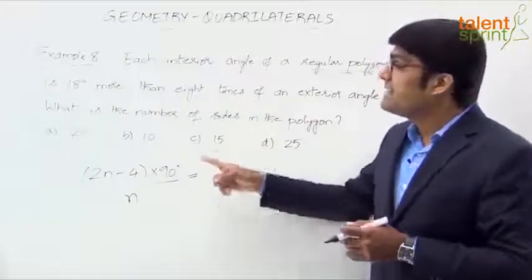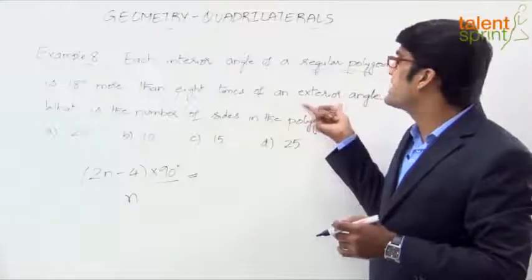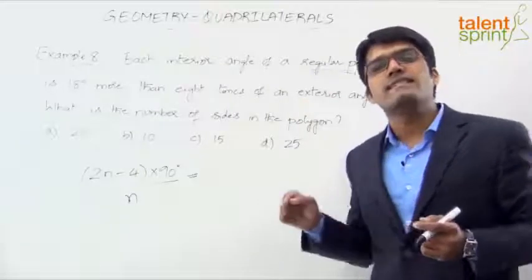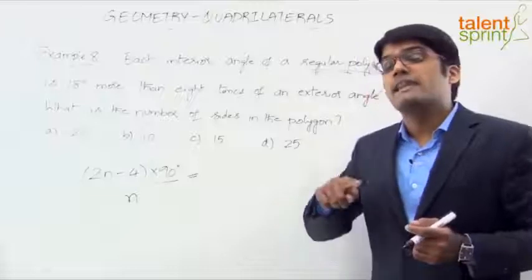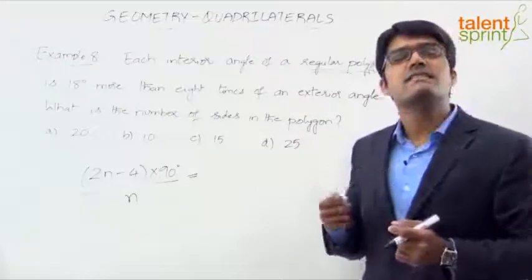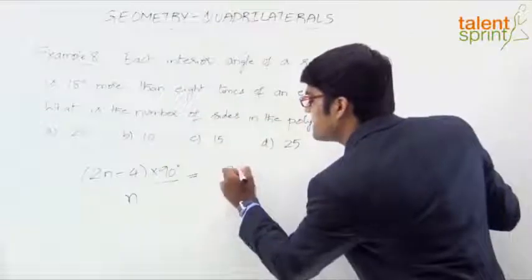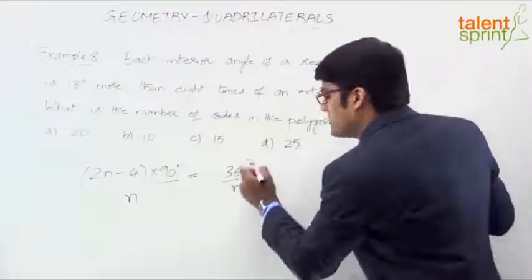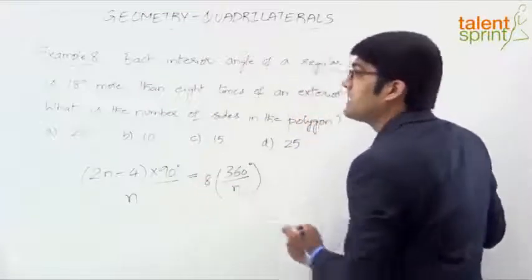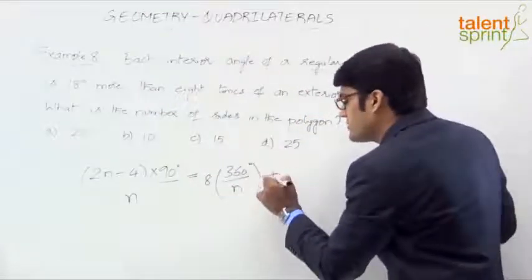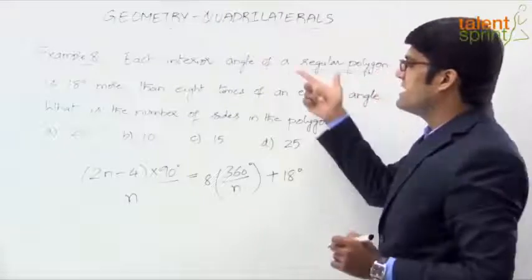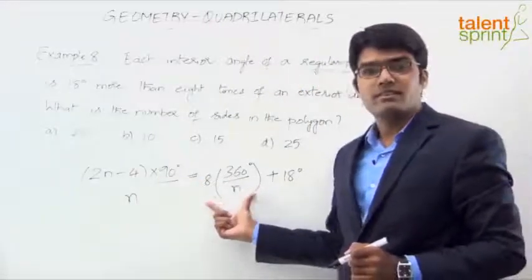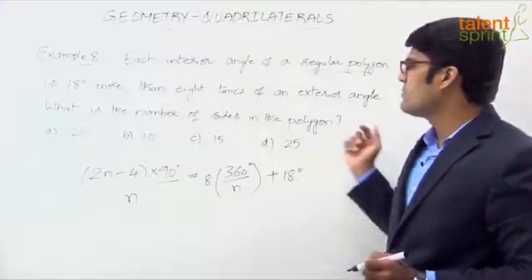The interior angle is 18 degrees more than 8 times the exterior angle. The sum of all exterior angles is 360, so each exterior angle is 360/n. Eight times the exterior angle is 8 × (360/n), and adding 18 degrees gives the interior angle. So the equation becomes: (2n−4) × 90 / n = 8 × (360/n) + 18.